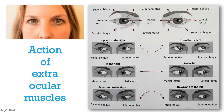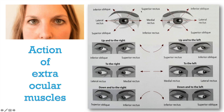Now let's talk about the six cardinal gazes. When you look upwards and towards the right, in the right eye it will be the inferior oblique that is working, and in the left eye it will be the superior rectus. Similarly, if you're looking upwards and towards the left, in the right eye it will be superior rectus, and in the left eye it will be inferior oblique.